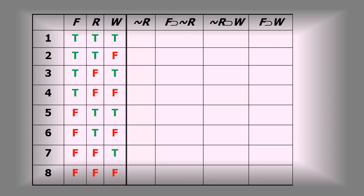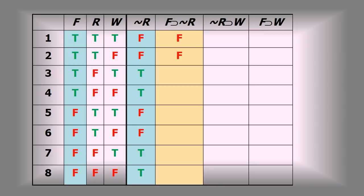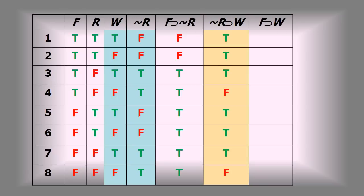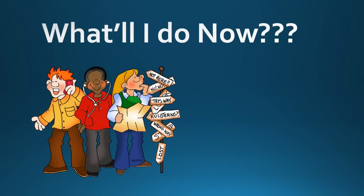Now I fill out the rest of the table. For tilde R, I flip-flop the values in the R column, getting two Fs and two Ts all the way down. For the column F horseshoe tilde R, I need where F is true and tilde R is false — that happens in rows one and two. For tilde R horseshoe W, I can find a row where tilde R is true and W is false in rows four and eight. For the conclusion F horseshoe W, rows where F is true and W is false appear in rows two and four.